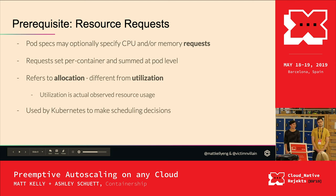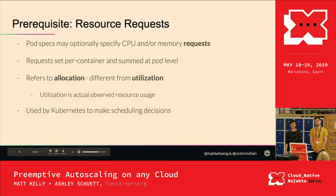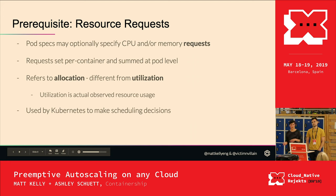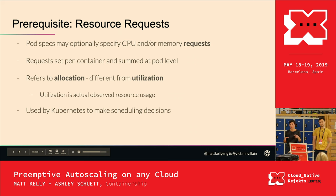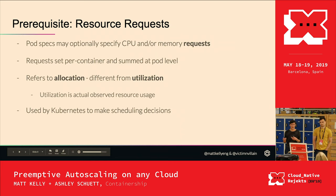A prerequisite to understand how these autoscalers work is to understand resource requests. On pods and deployments, you can specify CPU and memory requests — that's the allocated amount of CPU or memory the pod can use. These refer to allocation, which is different from utilization. To get actual utilization, you'd need to run a metric server. The pod spec allocation is what Kubernetes needs available on a node to schedule that pod; if there aren't enough resources left, the pod can't be scheduled.